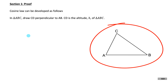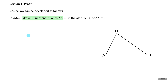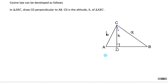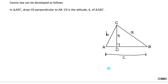I've given you triangle ABC. We draw CD perpendicular to AB — CD is the altitude or height of triangle ABC, labeled H. In the big triangle ABC, the sides are labeled based on their opposite angles: side A is opposite angle A, side B is opposite angle B, and side C is opposite angle C. We'll break side C into two parts: AD is called X, and DB is C minus X.